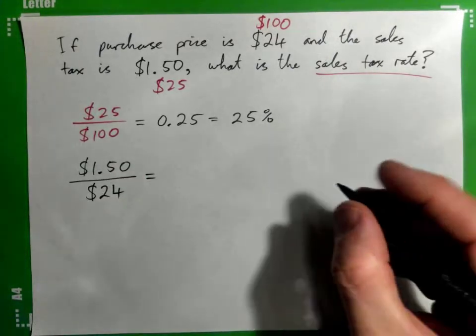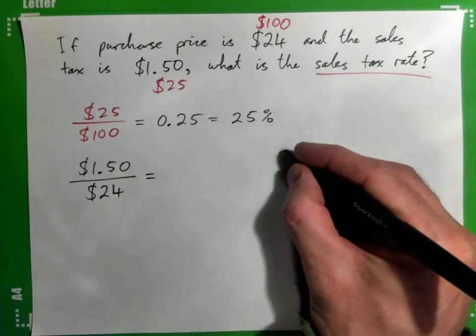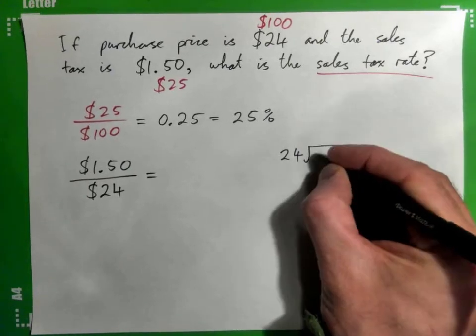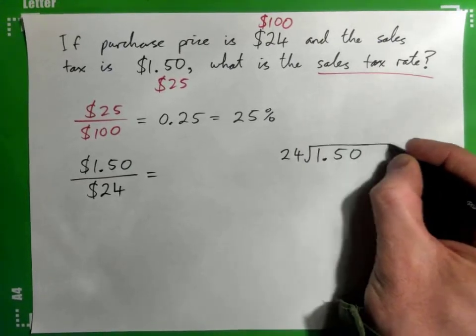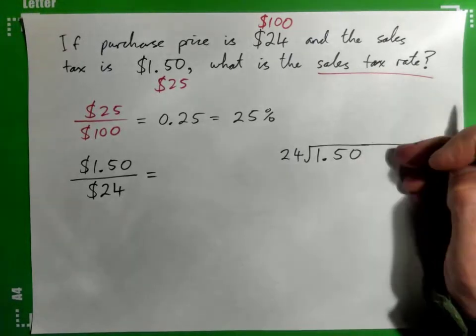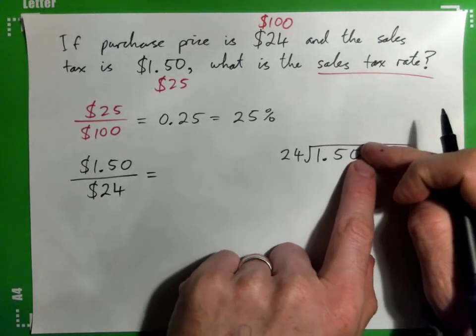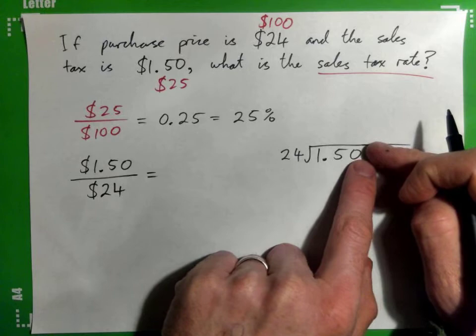So it's $1.50 over $24, and that is a long division. It's $24 into $1.50, right? Okay. So yeah, good point. All right, so think about 24s. How many 24s in $150?